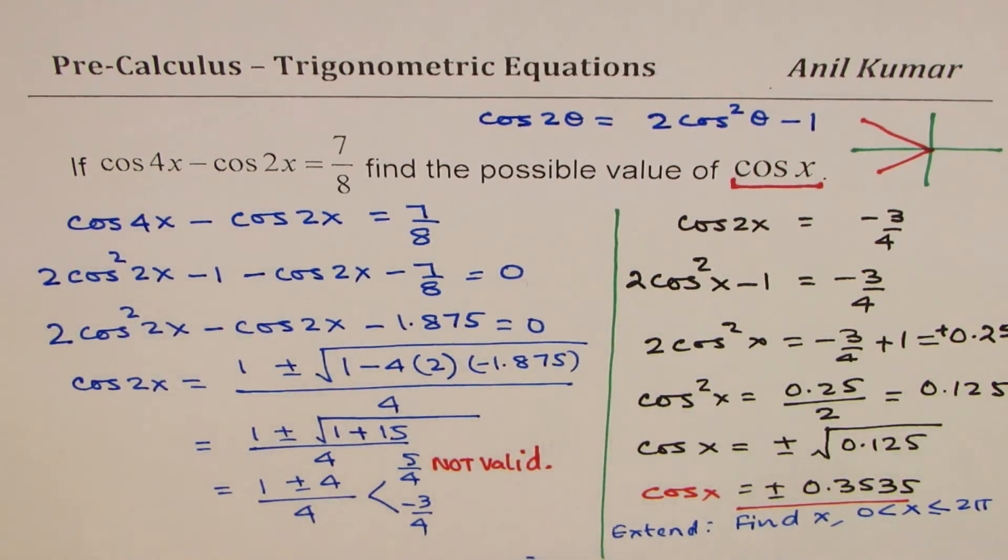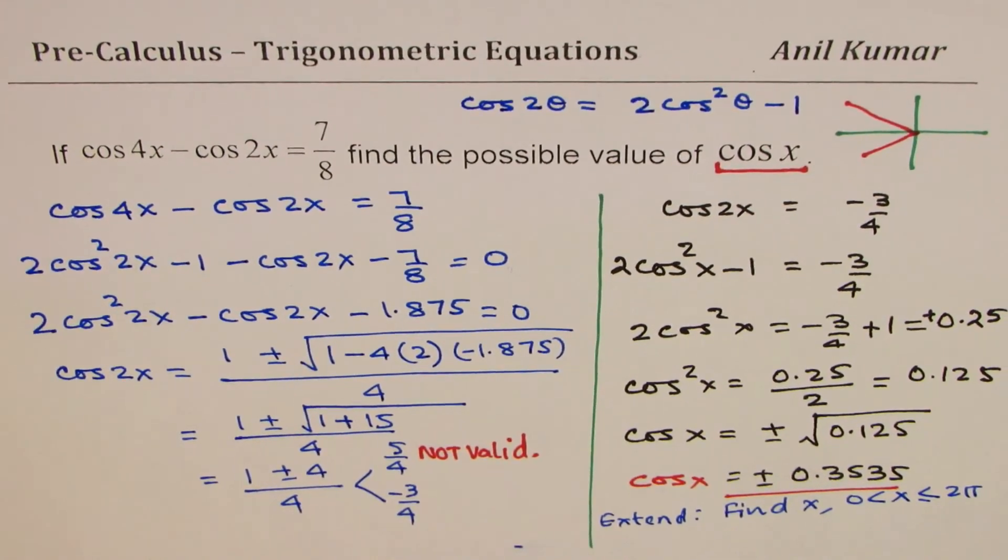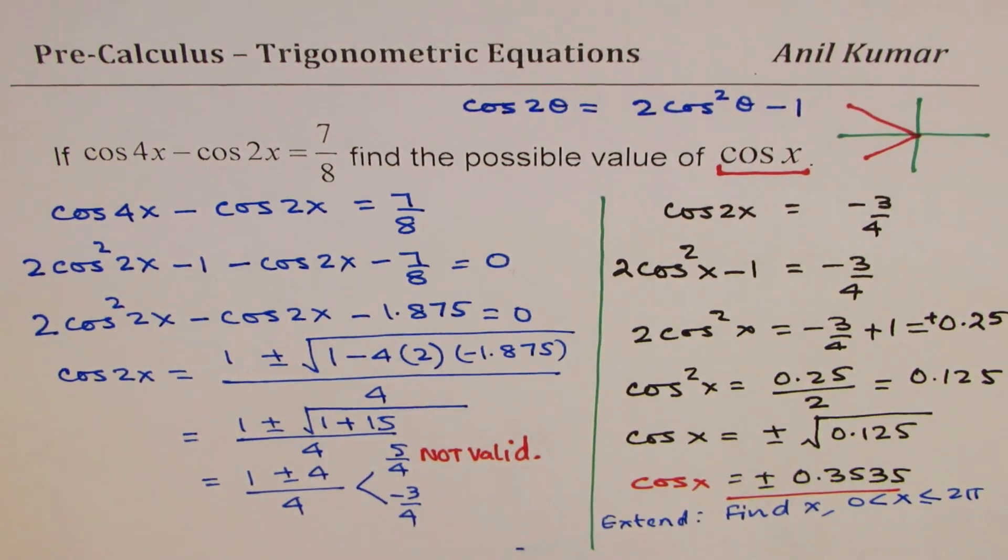I hope you understand the process we followed to find the value of cos x. We wrote the expression in terms of one trigonometric ratio, applied the quadratic formula, solved it, and got our solution. Feel free to write your comments, share your views, and if you like and subscribe to my videos, that would be great. Thanks for watching and all the best.